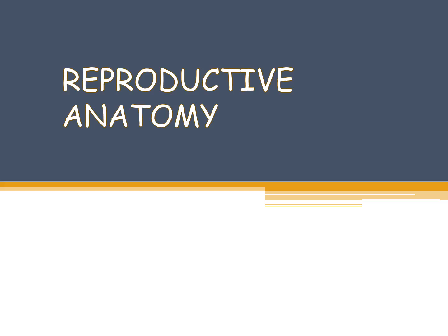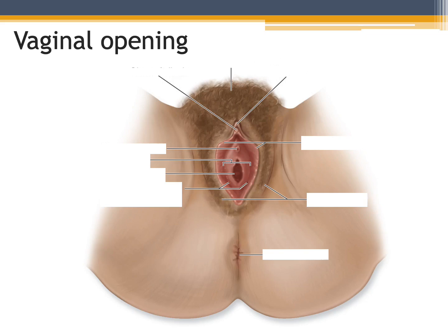Continuing with reproductive anatomy, let's take a look at the female reproductive system in terms of its anatomical structures. Starting with the external genital openings or the vaginal openings, we see to the most anterior side the pubis. We have two additional openings within this region — within the triangles of the pubic or anal regions — which includes the urethral opening as well as the anus, which are separate from the actual reproductive openings.